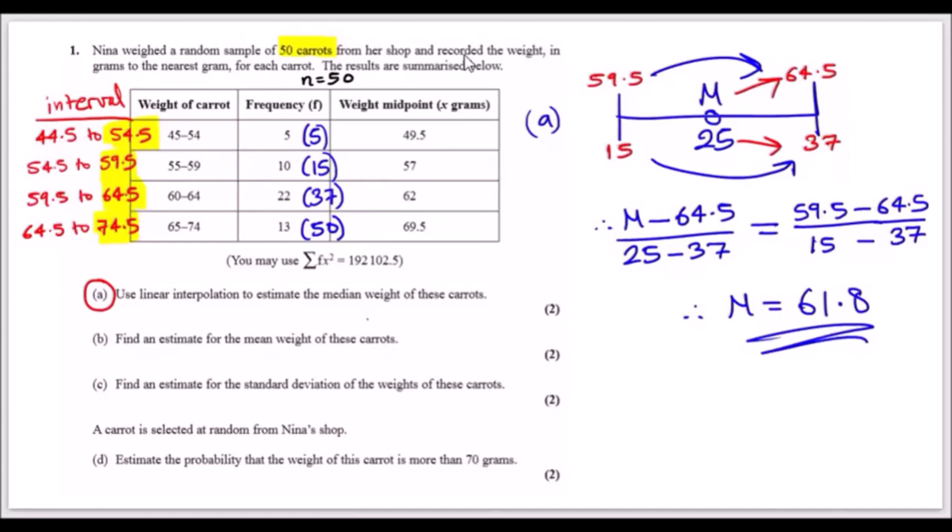We know this is because Nina actually recorded the weight to the nearest gram, so she's actually rounded down from some error interval. There was probably an upper and lower bound. Now let's look at each of the questions here.